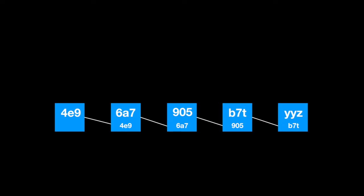As you can see, there are five blocks in this blockchain. Each block has its own individual hash code. The bigger text is its hash code, and the smaller text below it is the hash code reference to the previous block. So for example, in the second block, its hash code is 6A7, and it contains the hash code of its previous block, 4E9.